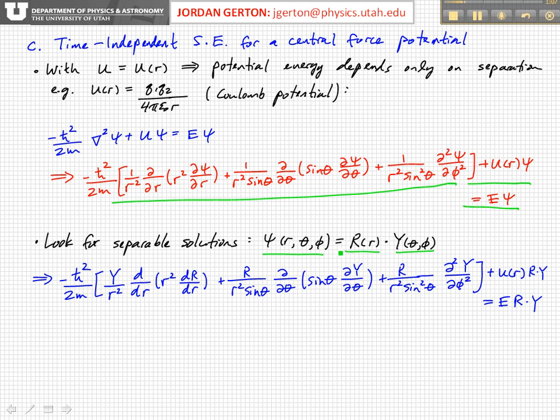Since Y does not depend on r, we can now take not a partial but a normal derivative, an ordinary derivative of r squared times dR/dr - r squared times the derivative of the function R with respect to little r. So this first term here turns into this. The second and third terms still have R in them, but we can factor out the function R, big R, out of these derivatives.